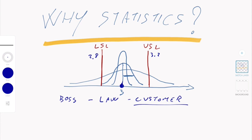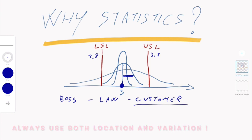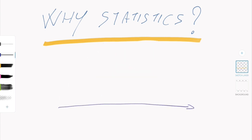Having an average of three is nice, but it is not enough to describe your process. The full description of your process is given by your mean value and your standard deviation — which is how much variability you have around your target value. Now consider that you could also have a situation where your process is centered on a different value entirely.